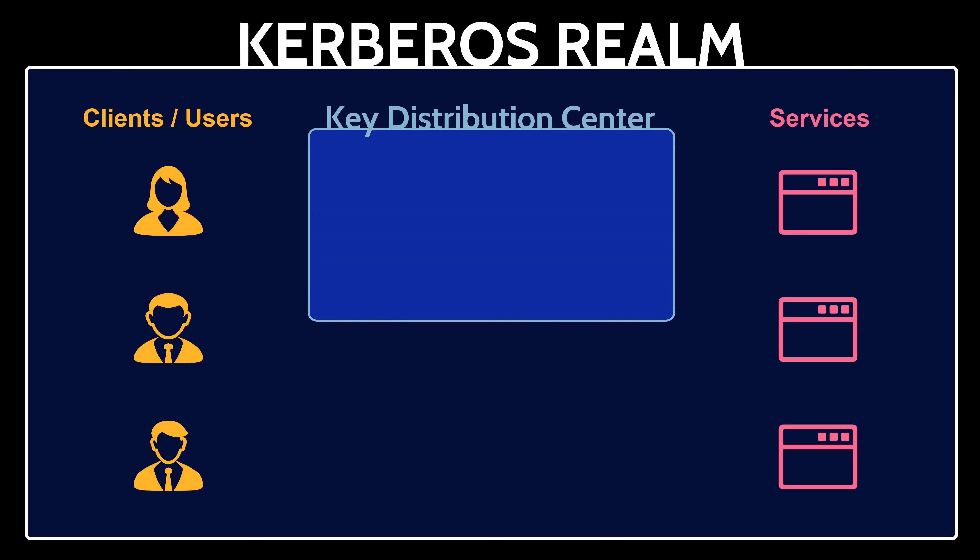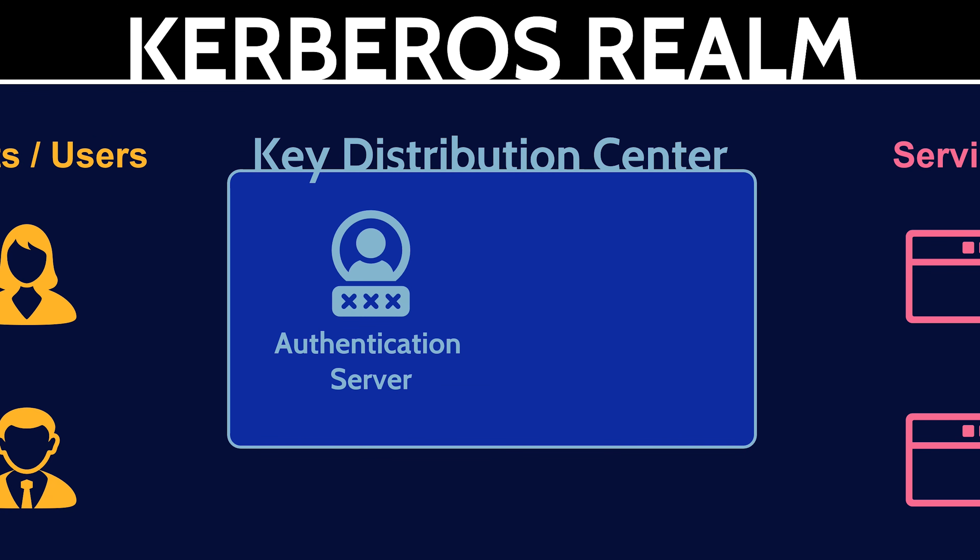A service is a resource provided to a client — for example, a file server or an application that a user wants to access. You can have multiple services that clients can access. The key distribution center, the KDC, is the heart of Kerberos. The KDC supplies tickets and generates temporary session keys that allow a user to securely authenticate to a service. The KDC stores all the secret symmetric keys for users and services. There are two servers within the KDC: the authentication server and the ticket granting server. The authentication server confirms that a known user is making an access request and issues ticket granting tickets. The ticket granting server confirms that a user is making an access request to a known service and issues service tickets.